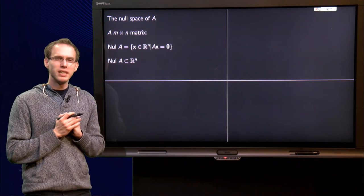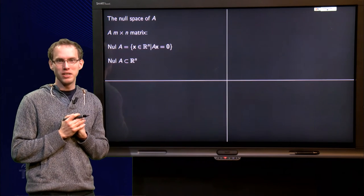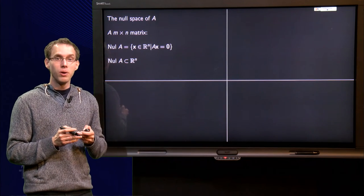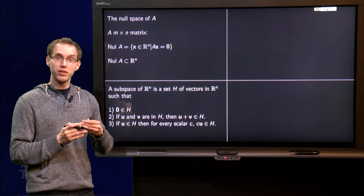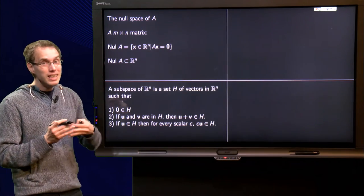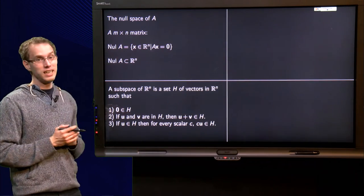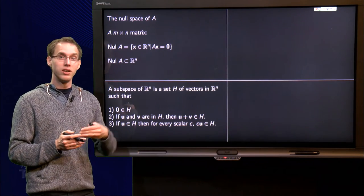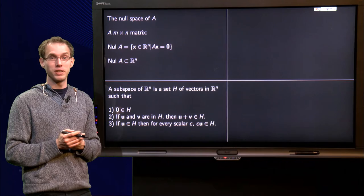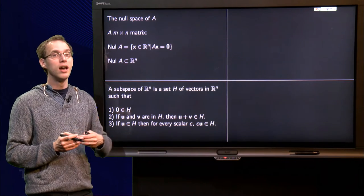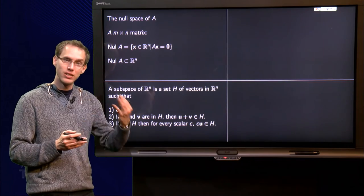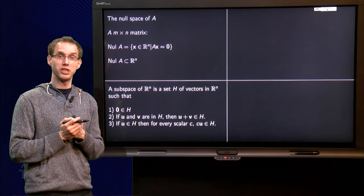Second question, is this a subspace or not? That is not so clear, it is not a span. So how can we check whether we have a subspace or not? Well, we need to check those three properties again, it is the only way to see whether it satisfies the properties or not. Does it satisfy these three properties, then null A is a subspace. Does it not satisfy one of the three or more, then it is not a subspace. So let us check.